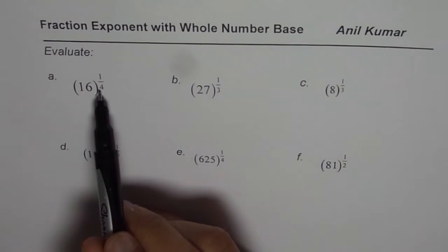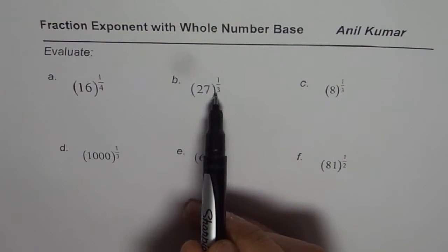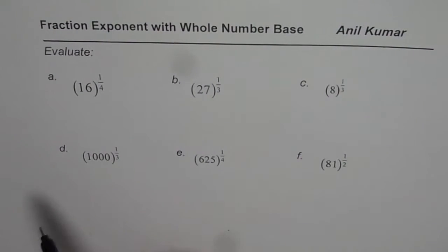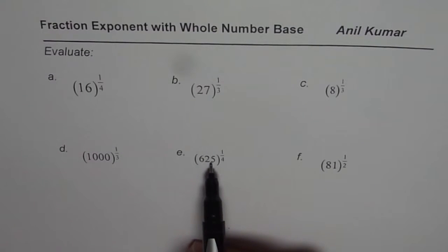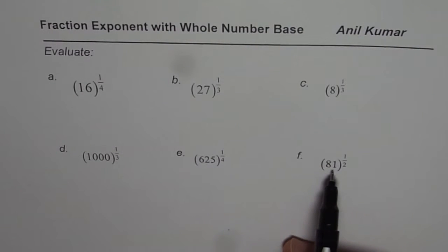We have 16 to the power of 1 over 4, 27 to the power of 1 over 3, 8 to the power of 1 over 3, 1000 to the power of 1 over 3, 625 to the power of 1 over 4, and 81 to the power of 1 over 2. Now, I've taken very simple examples since we need to understand the concept.